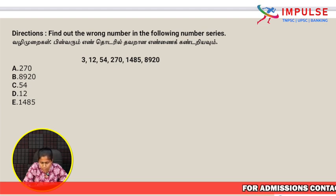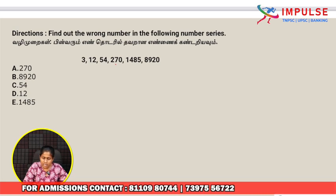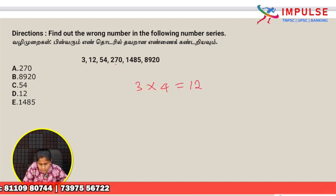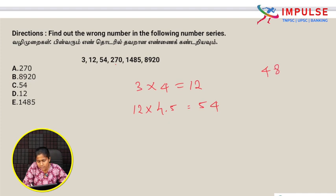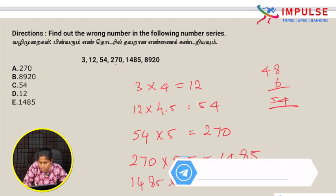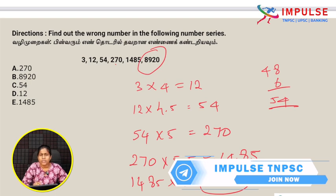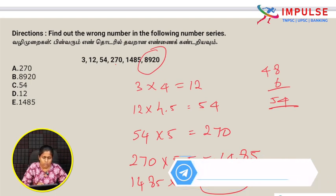The series is 3, 12, 54, 270, 1485, 8920. The logic: 3 into 4 is 12. 12 into 4.5 is 54. 54 into 5 is 270. 270 into 5.5 is 1485. 1485 into 6 is 8910. But 8910 is given as 8920, so this is the wrong number. Option B is 8920.